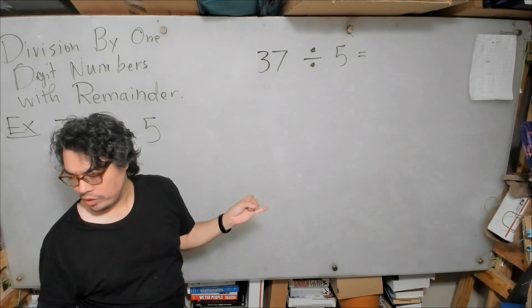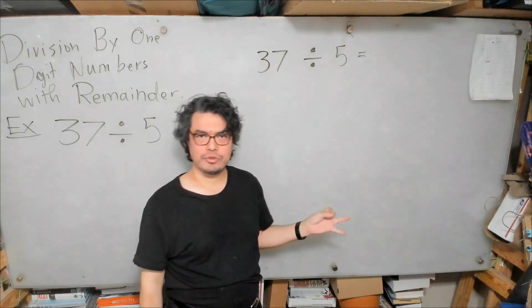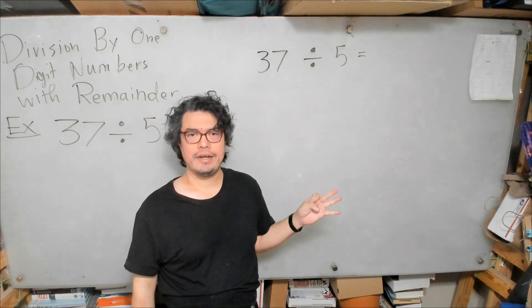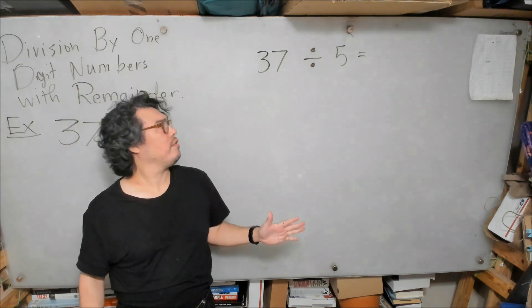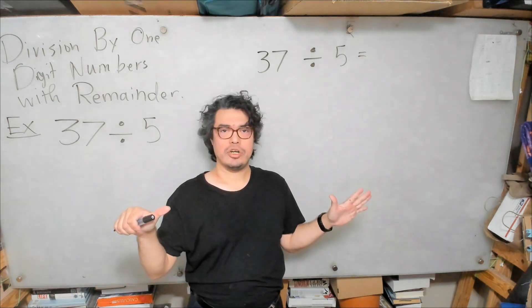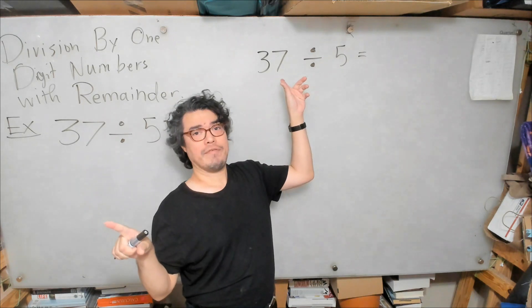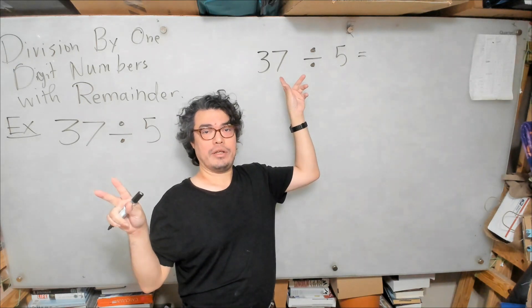So 5 times 1 is 5, 5 times 2 is 10, 5 times 3 is 15, 5 times 4 is 20, 5 times 5 is 25, 5 times 6 is 30, 5 times 7 is 35, 5 times 8 is 40.